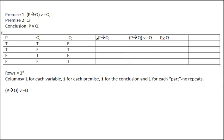Next is 'if p then q,' which is a conditional claim. P is the antecedent and q is the consequent — whatever is on the non-pointy part of the arrow is the antecedent, whatever is on the pointy end is the consequent. A conditional is true except when the antecedent is true and the consequent is false. So: true antecedent and true consequent — true; true antecedent and false consequent — false; false antecedent and true consequent — true; false antecedent and false consequent — true.